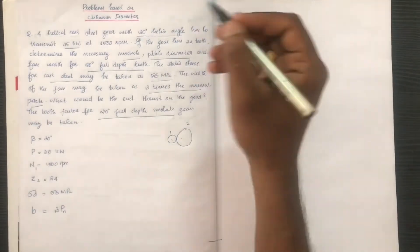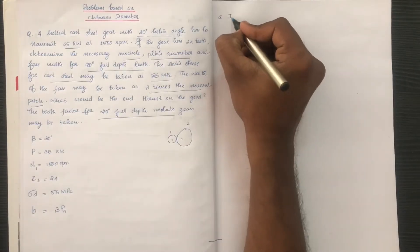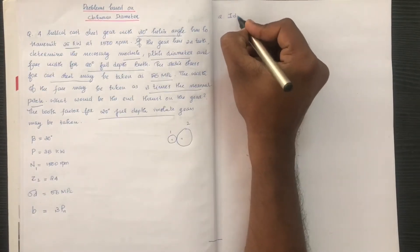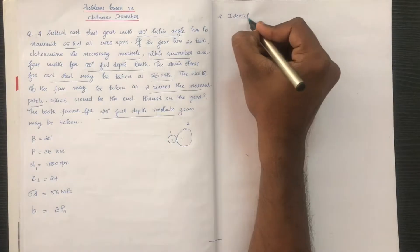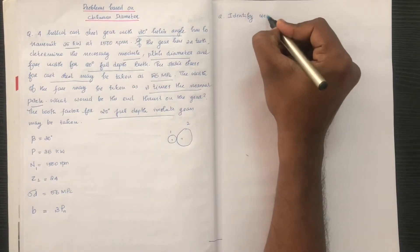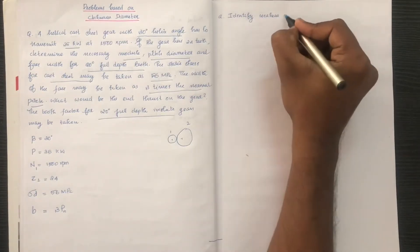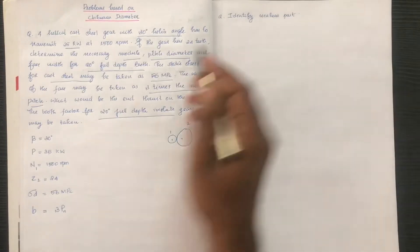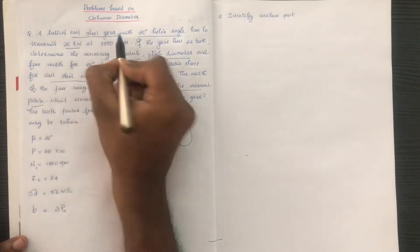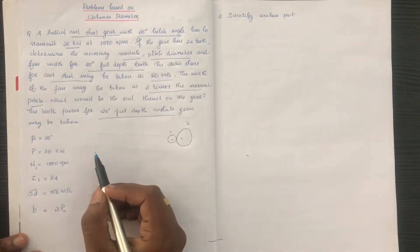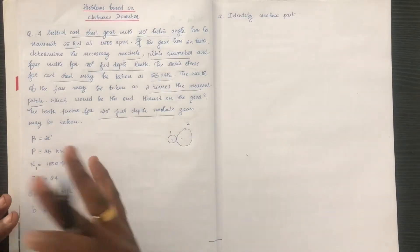Next, we identify the weaker part. Since both the pinion and gear are made of cast steel, we compare their material strengths.